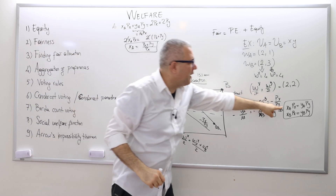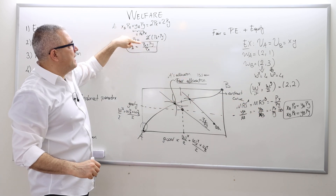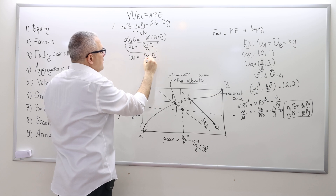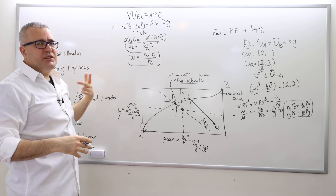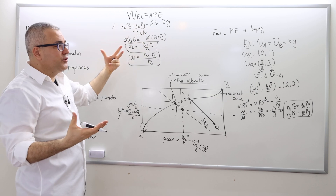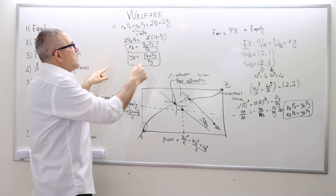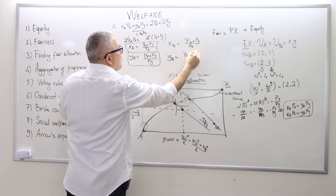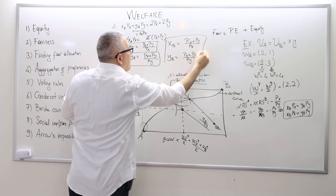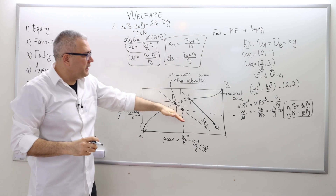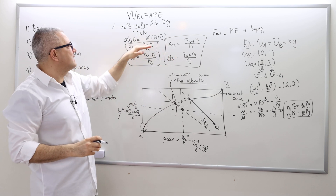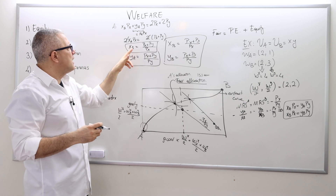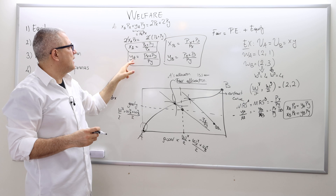Once we know XA, we can find YA: since XA·PX equals PX plus PY equals YA·PY, we get YA equals (PX plus PY) divided by PY. For agent B, because the agents have the same utility functions and the same hypothetical initial endowments, XB equals (PX plus PY) divided by PX, and YB equals (PX plus PY) divided by PY. Both agents have the same demand for good x and good y.